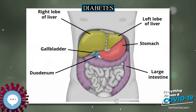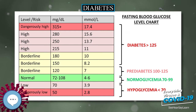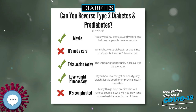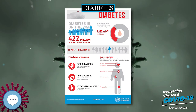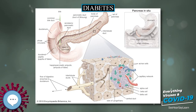When glucose concentration in the blood remains high over time, the kidneys reach a threshold of reabsorption, and the body excretes glucose in the urine. This increases the osmotic pressure of the urine and inhibits reabsorption of water by the kidney, resulting in increased urine production and increased fluid loss. Lost blood volume is replaced osmotically from water in body cells and other body compartments, causing dehydration and increased thirst. In addition, intracellular glucose deficiency stimulates appetite leading to excessive food intake.